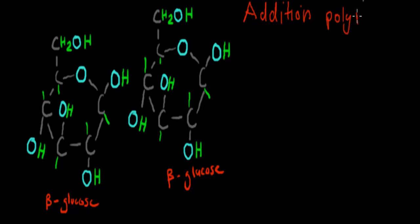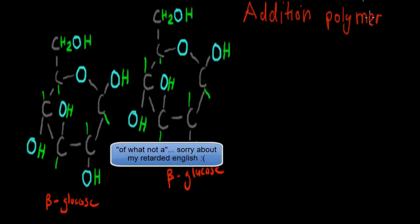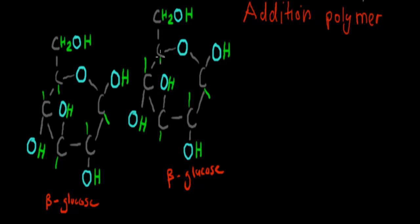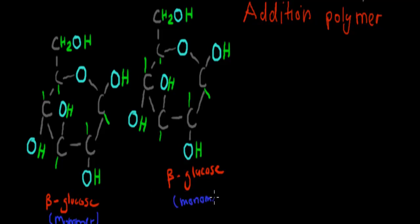I'm going to start by going over an example of what is not an addition polymer — something that you'll go over very soon as well — and that's a condensation polymer. You're going to have a look at this structure. It looks complex, but I'm going to point to the things we actually need to look at. This is called beta-glucose. These are two monomers — each of these rings is a beta-glucose monomer, one here and one there.